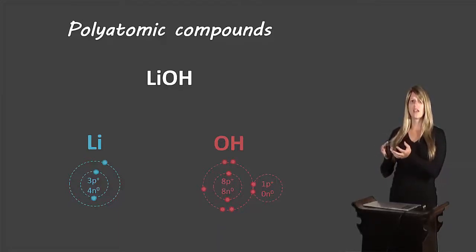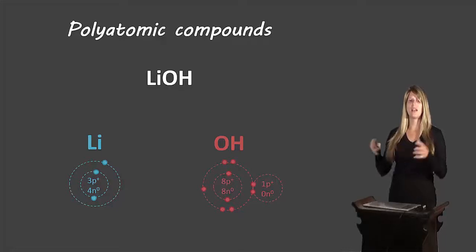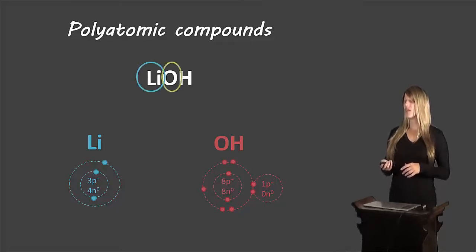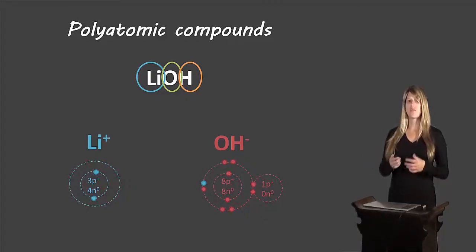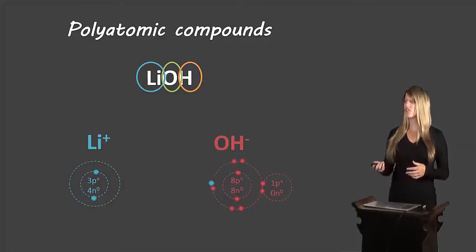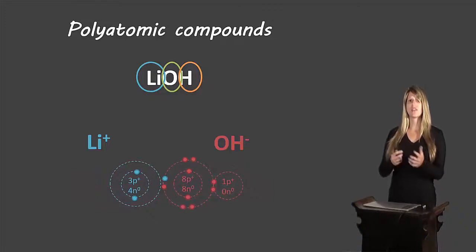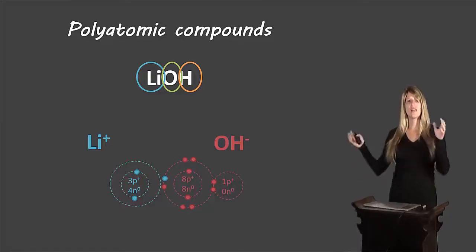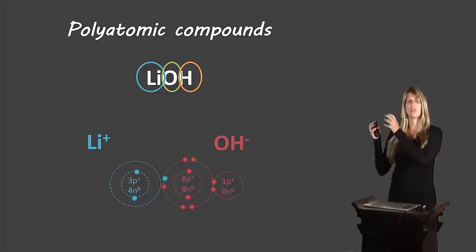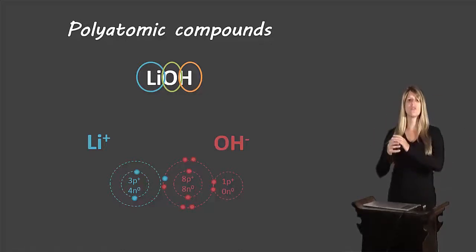What happens here is that a lithium atom turns into an ion, and the hydroxide becomes an ion, and then they attract together based on positive and negative charges. The electron moves from lithium to the hydroxide — lithium becomes positively charged, hydroxide negatively charged, and they attract to form lithium hydroxide. It's similar to regular ionic compounds in that an electron is transferred, except that the electron is transferred to a covalent compound — something already bonded covalently — and that overall covalent compound gains or loses an electron.